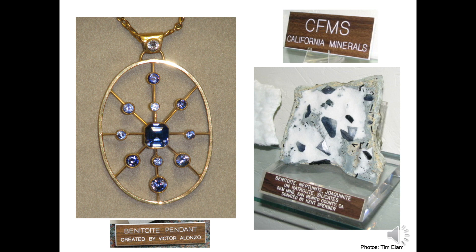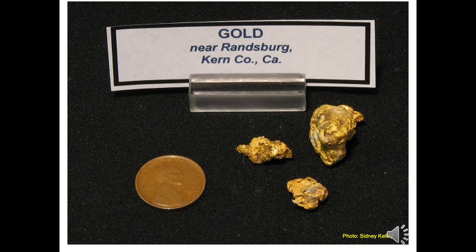California has both a state mineral and a state gemstone. On the right is the beautiful purplish-blue mineral benitoite, which is California's state gemstone. On the left is a pendant with faceted benitoite crystals. Benitoite is exceptionally rare, having been found only two places in the world — one is San Benito County, California. These and other spectacular California minerals are on display courtesy of the California Federation of Mineralogical Societies. The museum also possesses California's state mineral, gold, but we don't keep our gold nuggets on permanent display. They were found in Kern County's Mojave Desert region. Collectively, these placer nuggets weigh about 85 one-hundredths of an ounce. Learn more about Kern County's historic mining areas in other Buena Vista Museum videos.